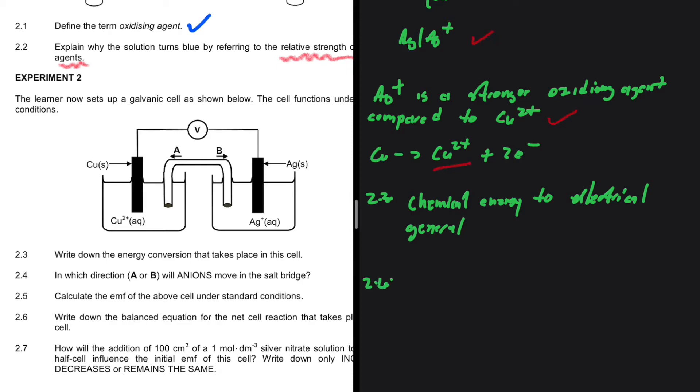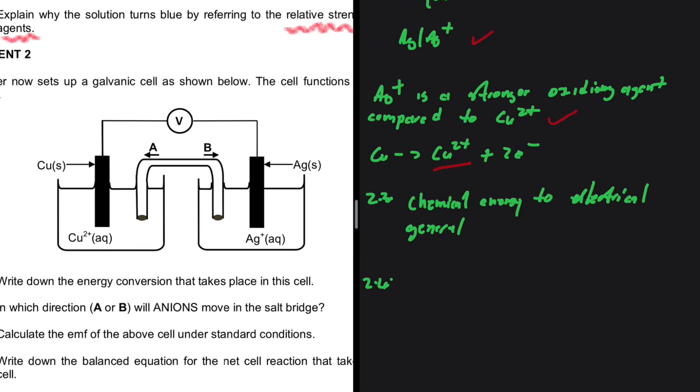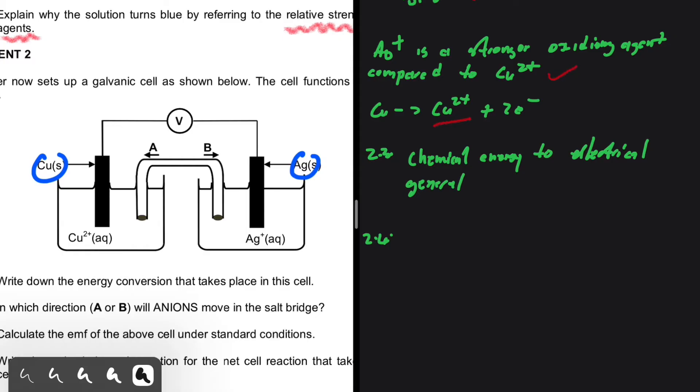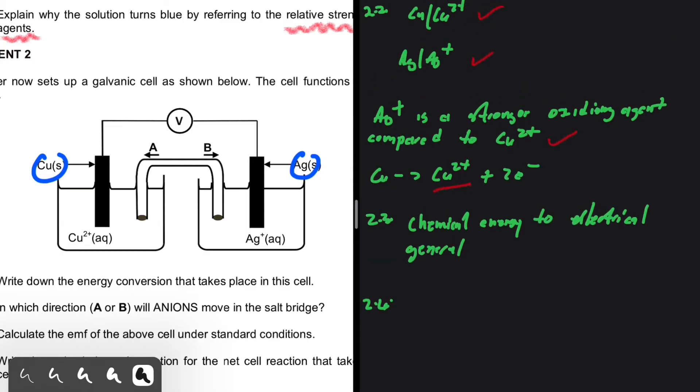2.4 asks in which direction will anions move in the salt bridge. Before we answer, let's first determine whether copper or silver will be the anode or the cathode. Just like we deduced in 2.2, copper is undergoing oxidation. Oxidation occurs at the anode, so this is our anode and this is our cathode.